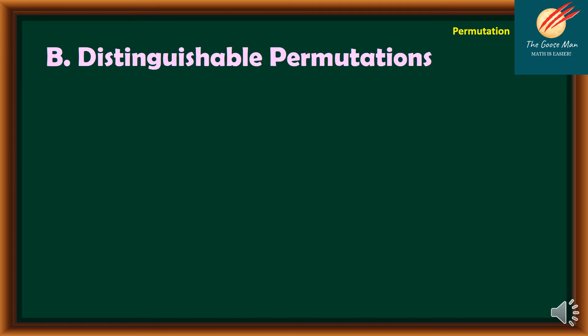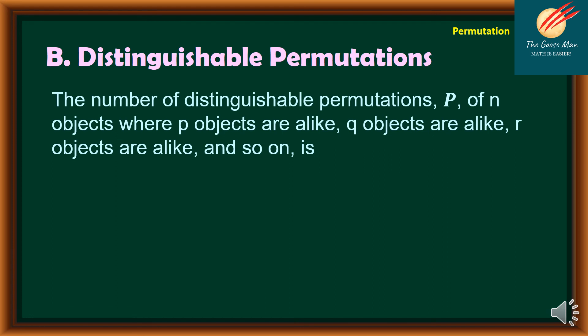Let's move on to distinguishable permutation. The number of distinguishable permutations where p objects are alike, q objects are alike, r objects are alike, and so on, is P equals n factorial divided by p factorial times q factorial times r factorial, and so on.